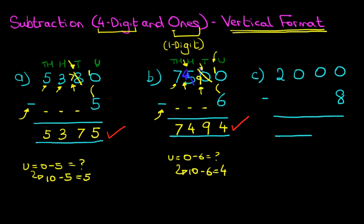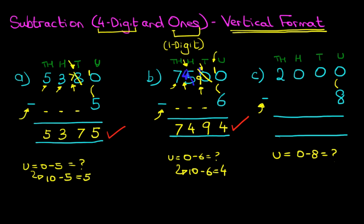If you've followed all the principles in this tutorial, you'll know exactly what to do for this question. Let's label the columns: units, tens, hundreds, and thousands. We are now ready to do the subtraction. As always, we start on the right-hand side first. 0 minus 8 — that's something we cannot do. So we have to take 1 from the tens. But that is 0, so we cannot do that. Let's move to the next column, the hundreds column. Well, that's also 0, so we cannot take 1 from there.